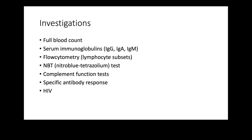When it comes to investigations, you need only about seven: full blood count, serum immunoglobulin levels with each component, flow cytometry for lymphocyte subsets, NBT complements, specific antibody responses (antibody response against polysaccharide vaccines — diphtheria, tetanus, pneumococcal antibodies), and of course HIV testing. If you do these seven investigations, almost all immune deficiencies can be diagnosed — at least a provisional diagnosis can be reached.